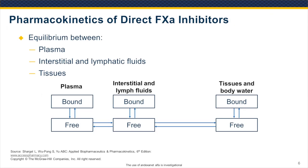It's important to look at the pharmacokinetics of the direct factor Xa inhibitors. While andexanet distribution is restricted to the vascular compartment, the direct factor Xa inhibitors, like all small molecules, are widely distributed throughout the body, and there's an equilibrium established between bound and unbound molecule in each of those compartments. Importantly, the unbound level or free concentration is equal across all those compartments.